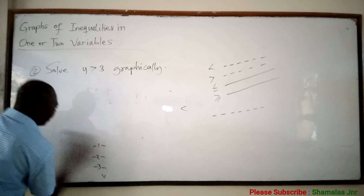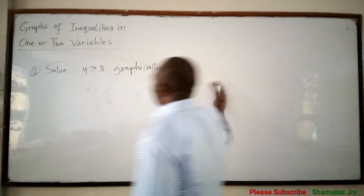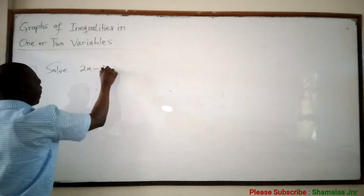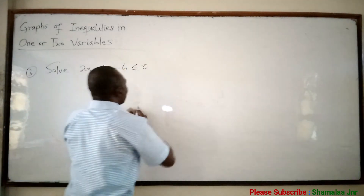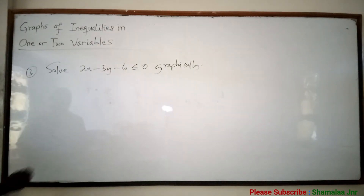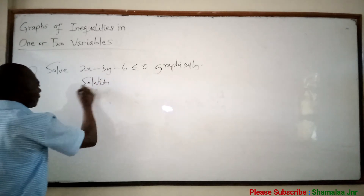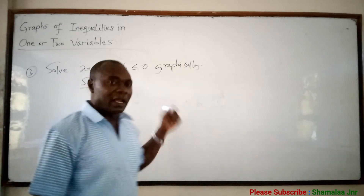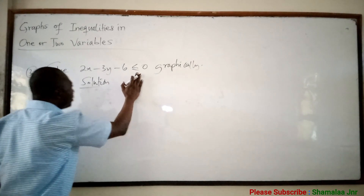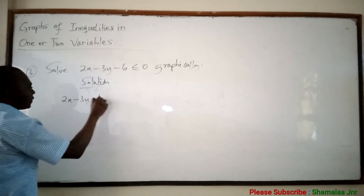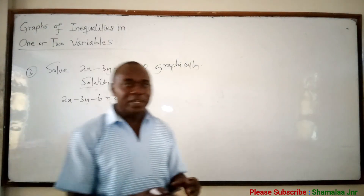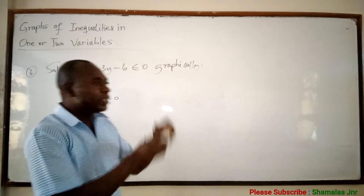Let's look at the last question. Question number 3: solve 2x minus 3y minus 6 less than or equal to 0 graphically. This one is not straightforward like the first two cases. When you are given something like this, you have to first convert it into an equation: 2x minus 3y minus 6 equal to 0. Then try to get 2 points. If you are able to get 2 points, use a straight edge to join the points, and that straight line will cater for all the other points.